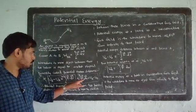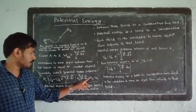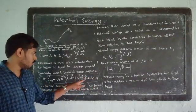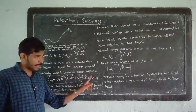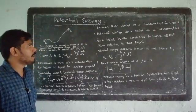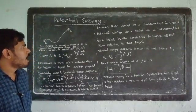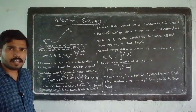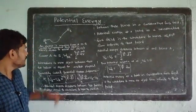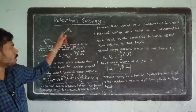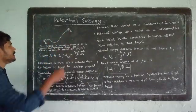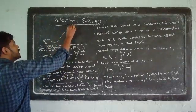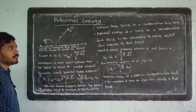Integral A to B of F dot dR is equal to KB minus KA, and the potential energy integral A to B of F dot dR is equal to UA minus UB. The reference point is taken at infinity.